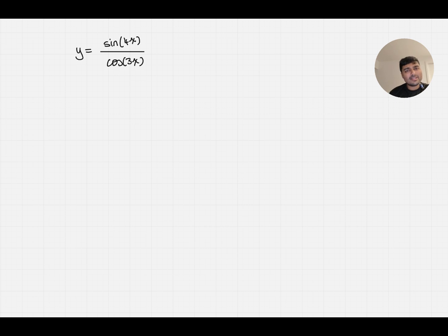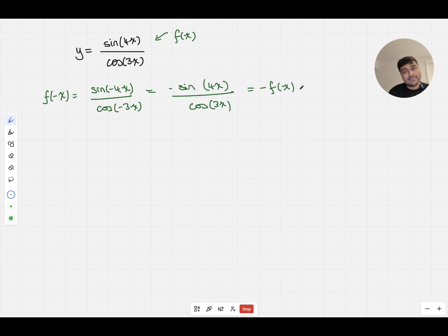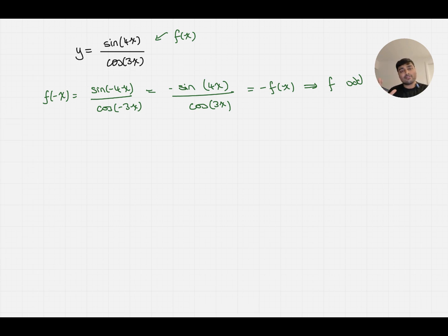In terms of symmetry, I notice that this function is an odd function. If I call this f(x), then f(−x) equals sin(−4x)/cos(−3x). Since sine is an odd function I can bring out the minus sign, giving −sin(4x)/cos(3x) — because cosine is even — which is the same as −f(x). That tells me f is an odd function. This is quite useful because when I sketch this graph I only need to sketch it for positive values of x and then rotate it 180 degrees about the origin.